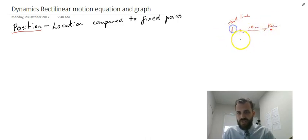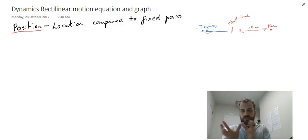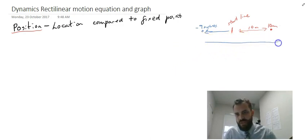If this was the start line and we were going in this direction and you're back here somewhere, your position might be negative 9 meters. So position is directional, you can either be behind the start line or at the start line. Now I'm talking about start lines, but obviously what I'm really talking about is our number line: zero, one, two, negative one, negative two.